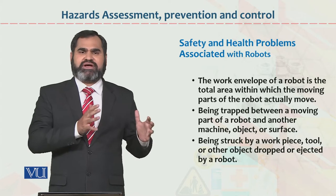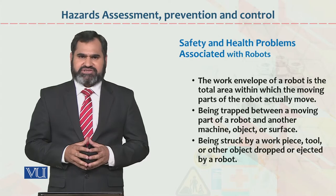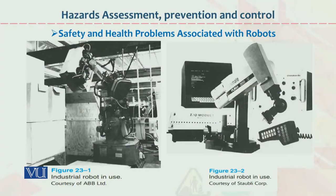In sub-cheezon ko dear students hum ek statement mein yun samaj sakte hain ki robots ko human interaction ki need hai. Jab human interaction robots ke saath hoga, to us ke results positive honge aur different honge. Technically, yahan pe dear students yeh dekhen: Safety and health problems associated with robots. Yahan pe industrial robots in use — figure 23-1 — jo ki organizations ke andar associated hain kaam ke liye.